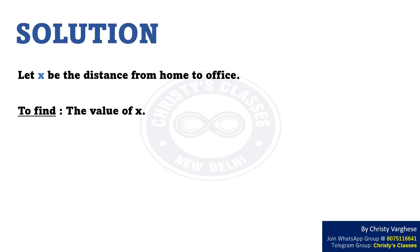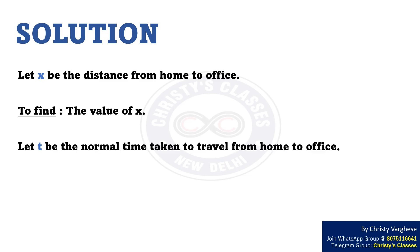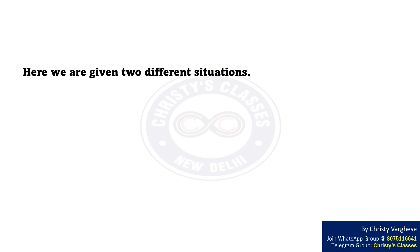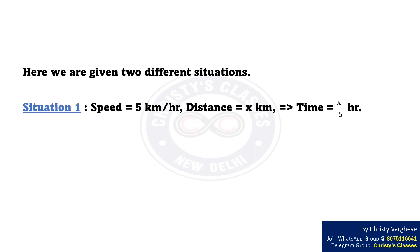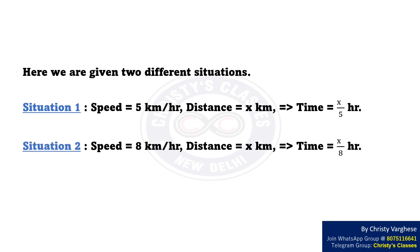Solution: Let X be the distance from home to office. We are required to find the value of X. Let T be the normal time taken to travel from home to office. Remember that time equals distance divided by speed. We are given two different situations. Situation 1: speed equals 5 km per hour, distance X km, which implies time equals X/5 hours. Situation 2: speed equals 8 km per hour, distance equals X km, which implies time equals X/8 hours.